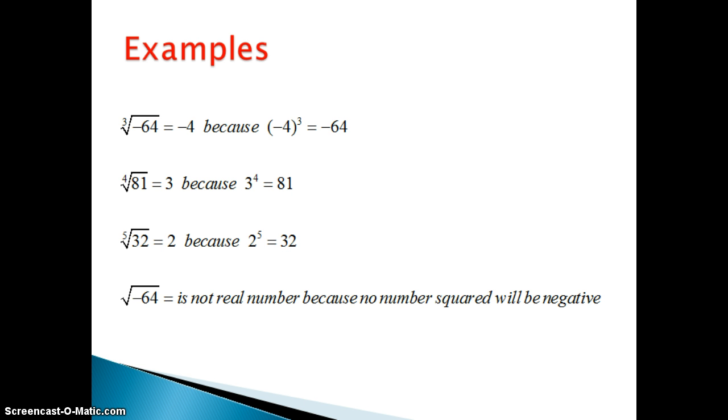The next example you see is the fourth root of 81. And that is equal to 3, because 3 to the fourth is equal to 81. The third example we see is the fifth root of 32, which is equal to 2, because 2 to the fifth power is equal to 32.